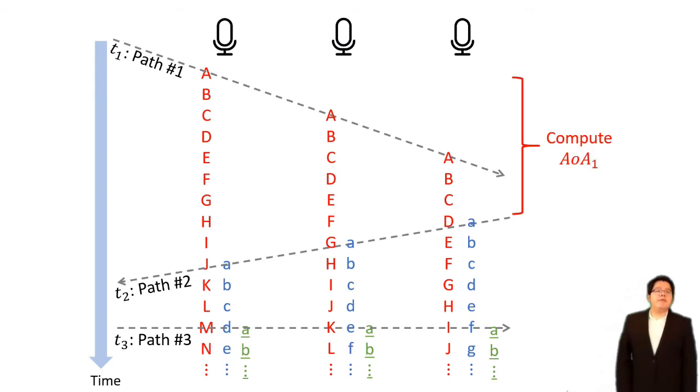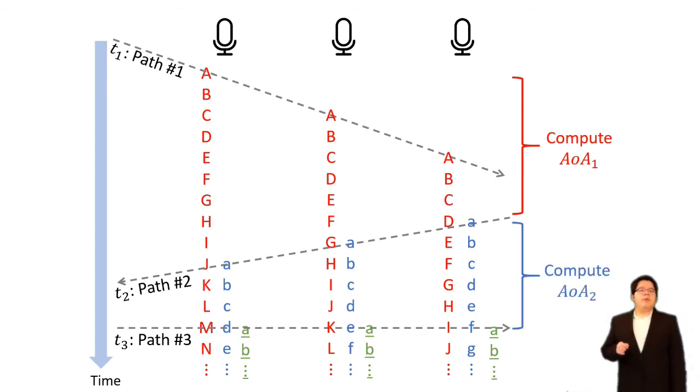Here, we can see that before the first blue symbol or the second pass signal joins, the received signal is only affected by the direct pass or the red signal. So we can use this segment to compute the direct pass angle of arrival. And before the green third pass joins, this segment is only composed of the right pass and the second pass, only the red and blue. So again, we can use this segment to compute the second angle of arrival, and so on. After the pauses in the speech, the right pass, the second pass, and the third pass joins one after another, so we can solve the AOA one by one.